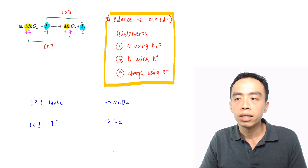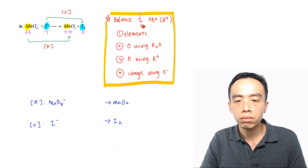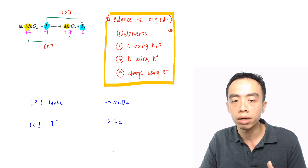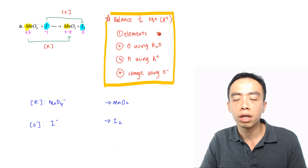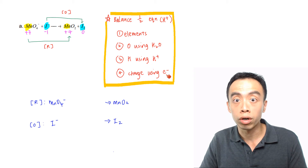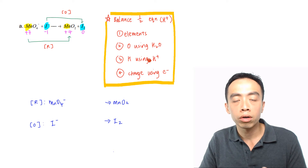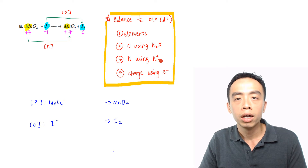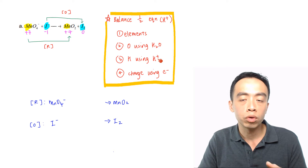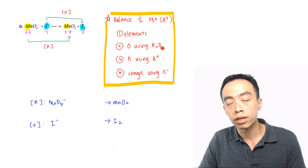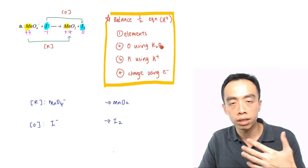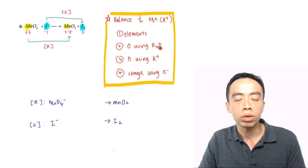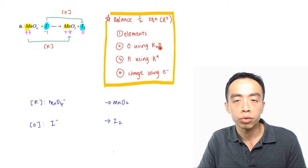The next thing we do is use these steps to balance each half equation in acidic medium. We balance the element first that gets oxidized or reduced, then balance oxygen using water, hydrogen using H+, and then charge using electrons. The reason we use water and H+ is because the redox reaction is in aqueous medium, so we have a lot of water, and if it is done under acidic medium, we have a lot of H+ — so we can safely use water and H+ to account for oxygen and hydrogen.